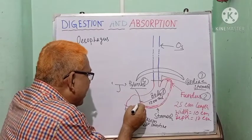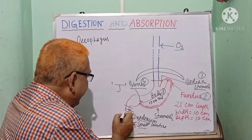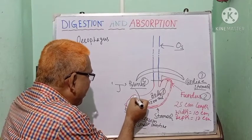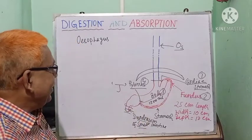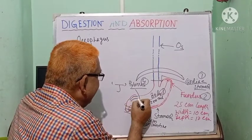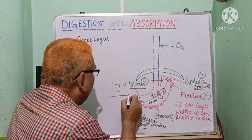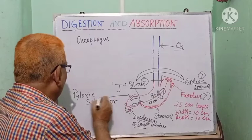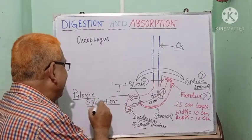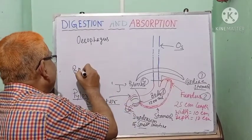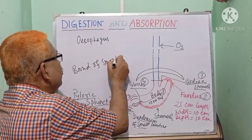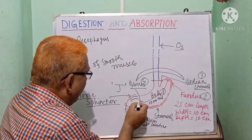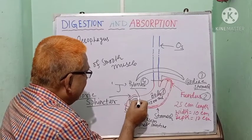The next part after the stomach is the duodenum of the small intestine. Within the pyloric region, there is a sphincter called the pyloric sphincter. A sphincter is nothing but a band of smooth muscle present at the junction of the pyloric stomach and the duodenum.